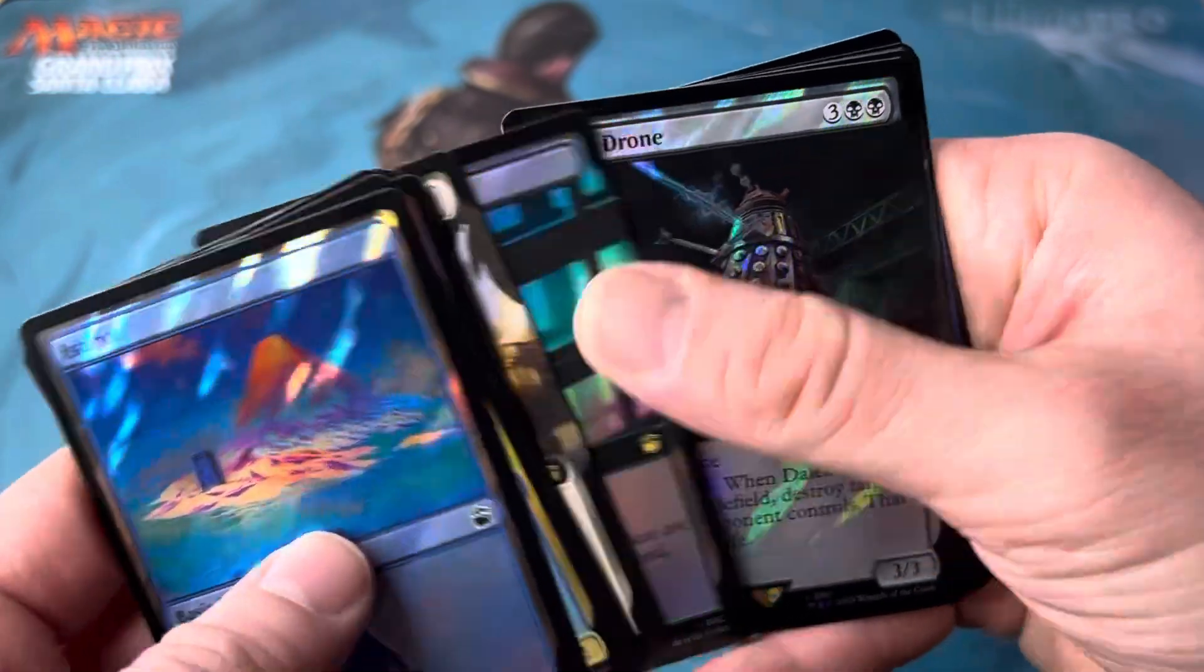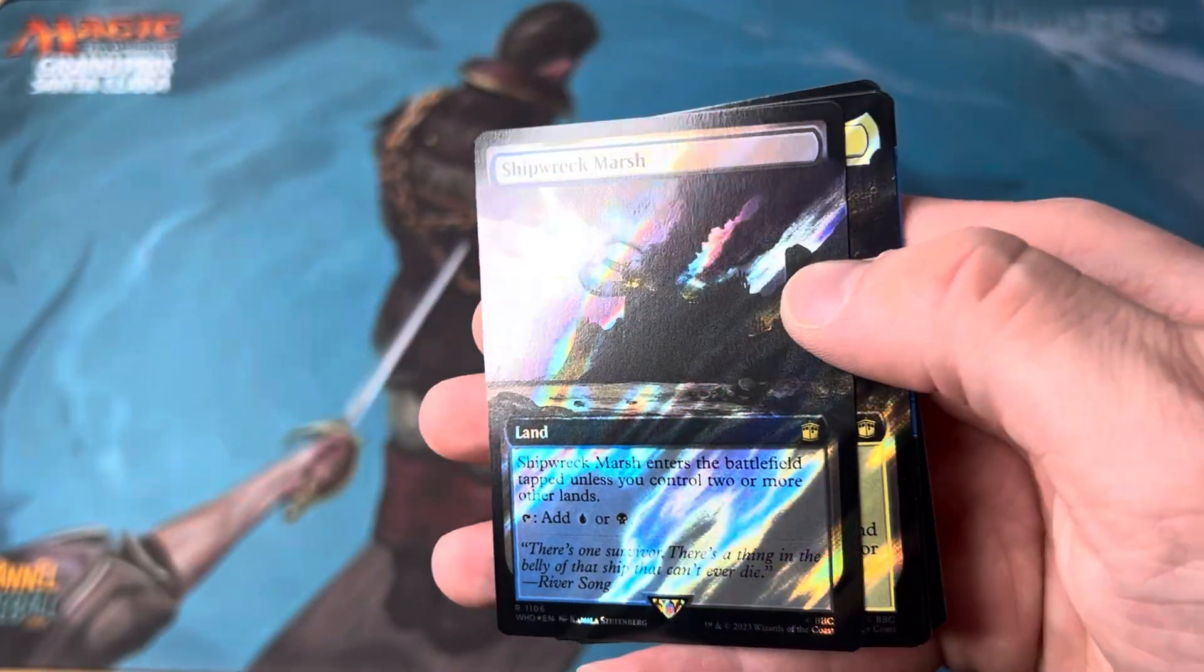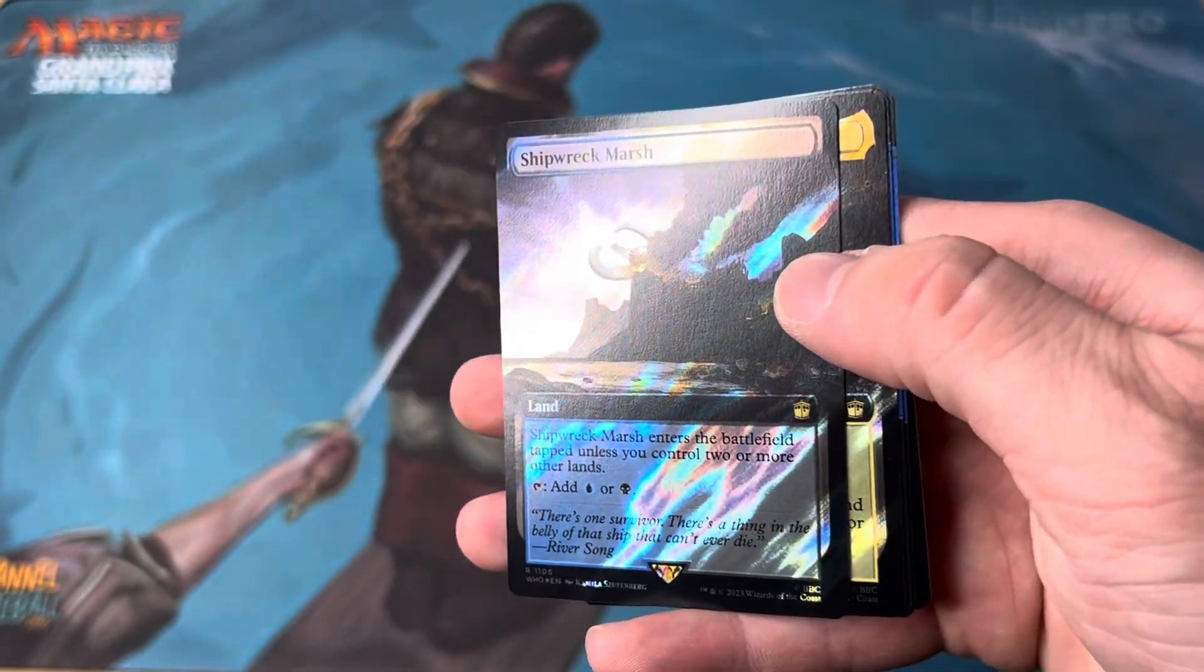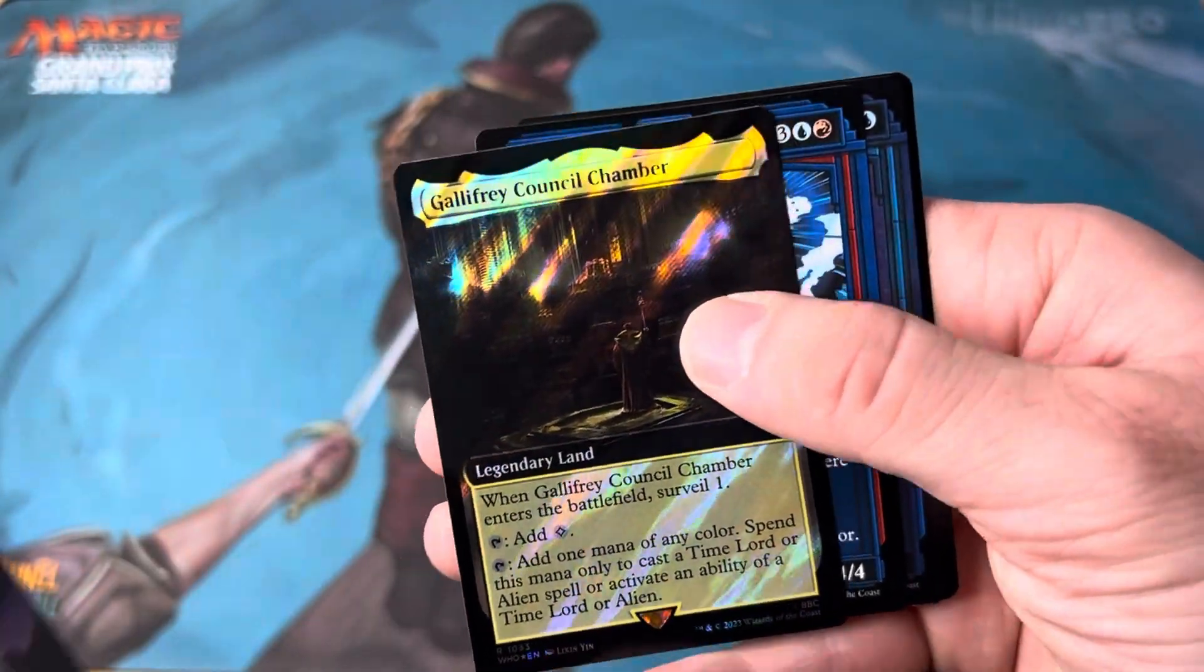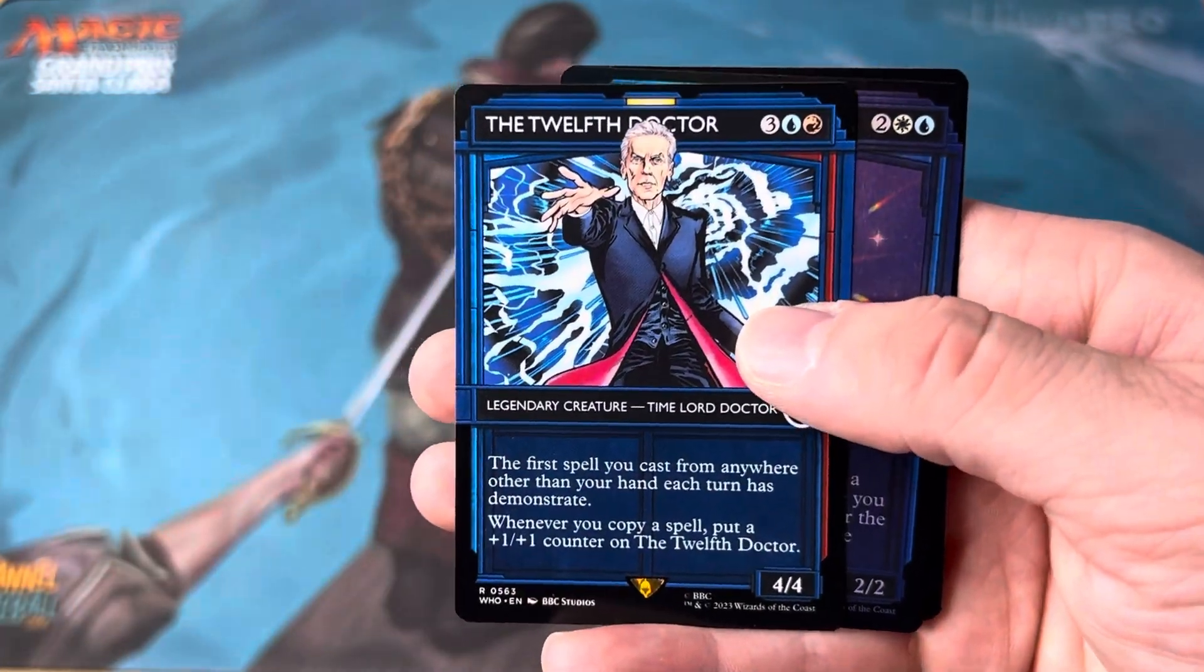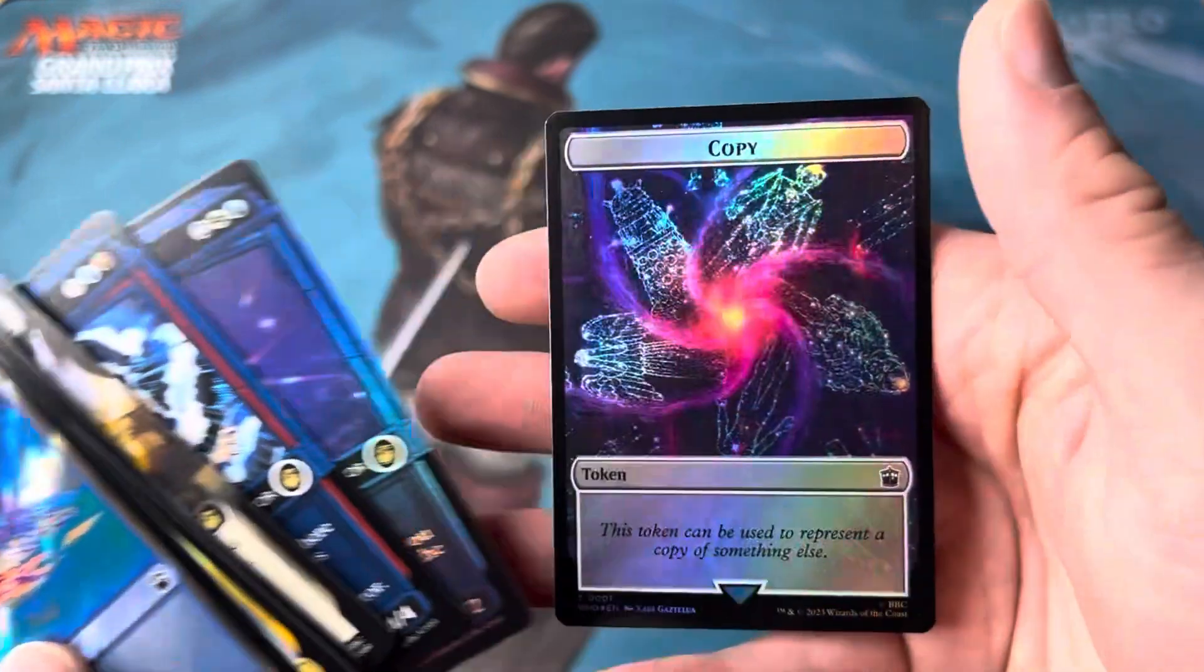Donna. Catacombs. Dalek drone. Shipwrecked marsh. Yeah it's a little hard to see. I do apologize but I think it has to do with this surge foil. The 12th doctor. Fantastic. The 5th doctor. Copy. Very cool.